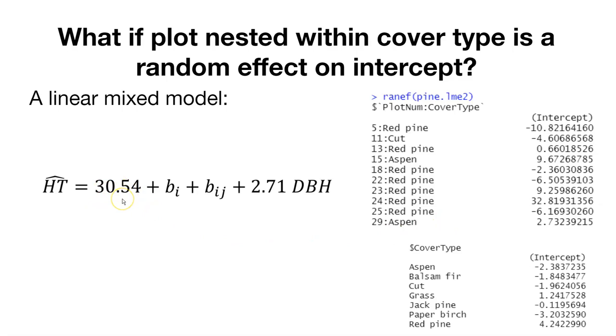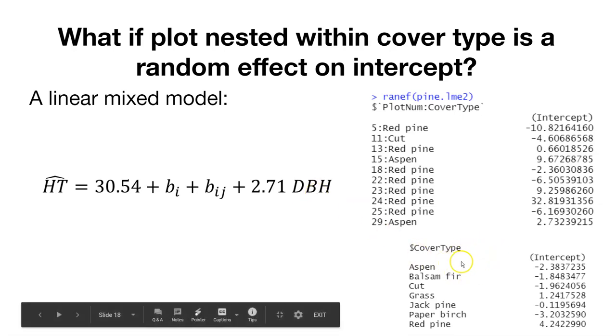Note that you'll get here different values of beta_0 and beta_1. Now we get 30.54 for beta_0 and 2.71 for beta_1. These values are slightly different from the previous model fits. In this model, we can obtain the 13 different random effects for each cover type, and those are shown here, although I'm only showing the first seven of them here in the output.